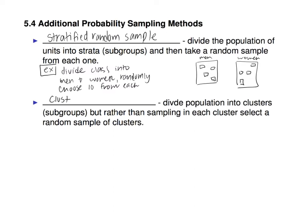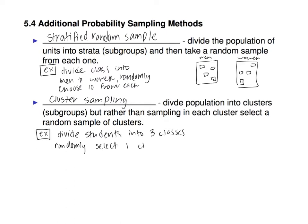Cluster sampling is when you divide the population into clusters, but rather than sampling within each cluster, you select a random sample of clusters. For example, suppose we divide students into three classes and randomly select one class to survey. The idea is you divide into groups — and usually that division should be somewhat random — and then you choose everybody in a selected group while the other groups don't get selected.